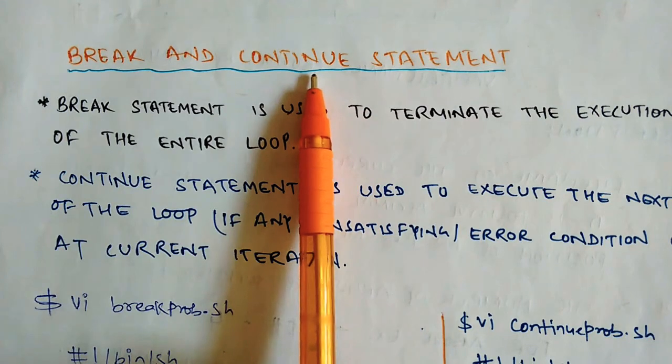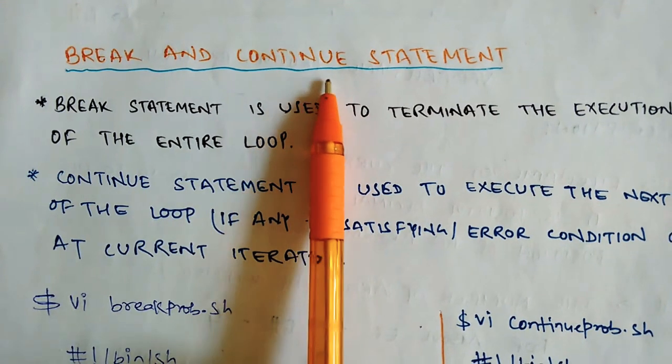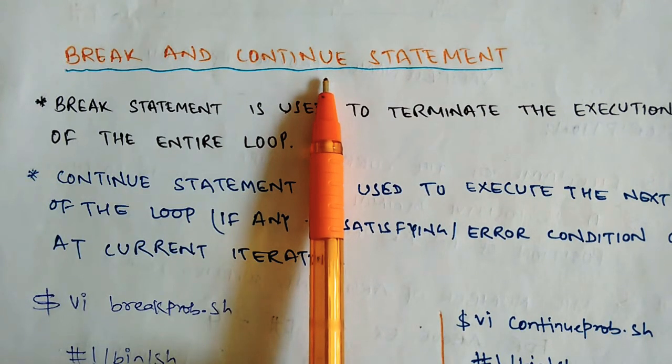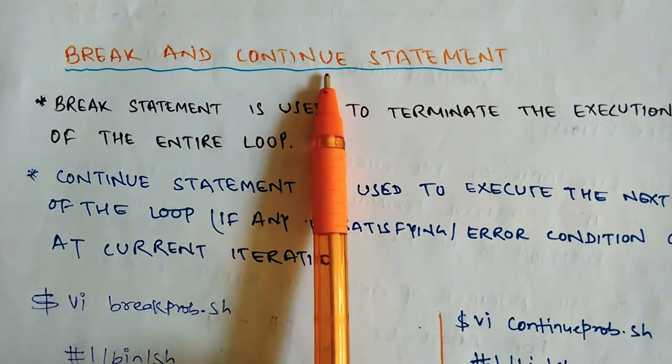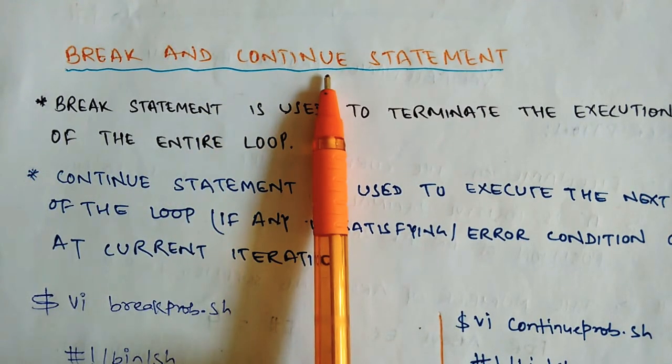If we talk about continue statement, suppose that you are running a loop. You have to execute 5 times that loop. And you want to execute first iteration, second iteration, after that third iteration, then you don't have to print it. In that case, we will use continue. Next iteration will continue without any checking conditions.